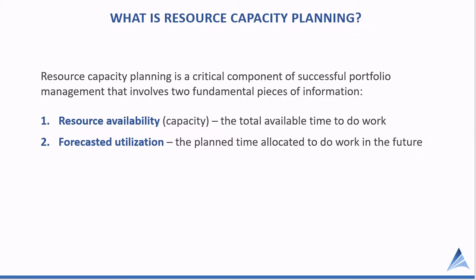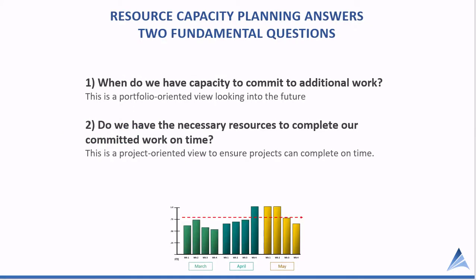We covered this topic in more detail in our previous video on capacity planning, but we want to provide a quick review before jumping into best practices. We're really looking at the availability of people to do work and comparing that against their forecasted utilization — how much time is allocated for them to do work in the future. If people are forecasted to do more work than they have available time, then we're going to have a resource risk, and that prevents us from executing against the portfolio.